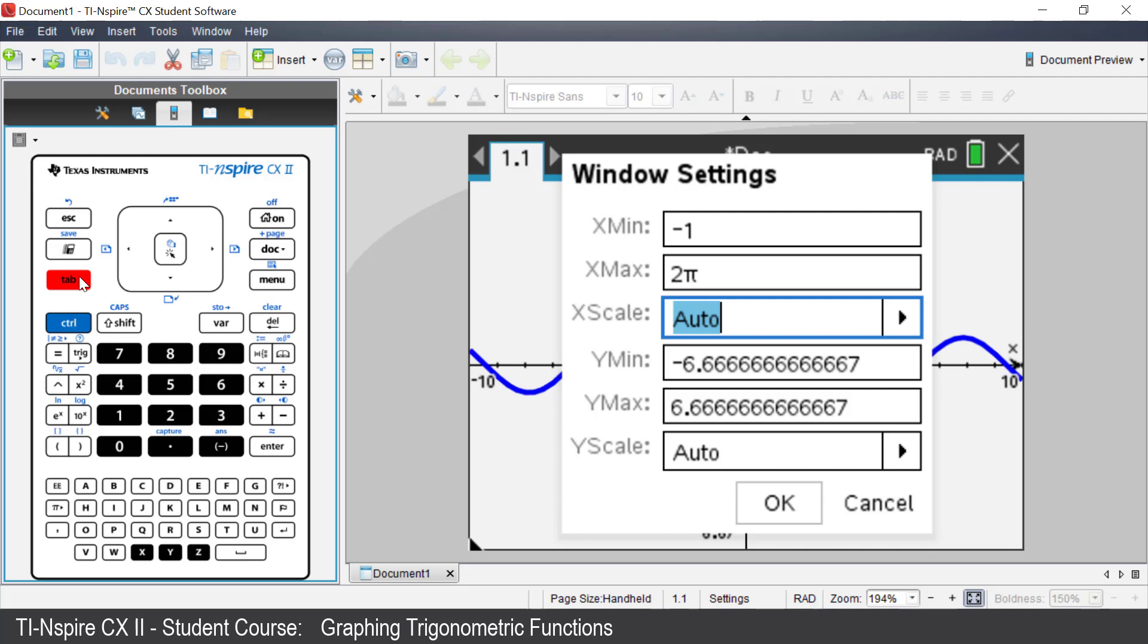Tab down to the scale. Enter π over 2. If you enter π, the calculator recognizes that it is π.